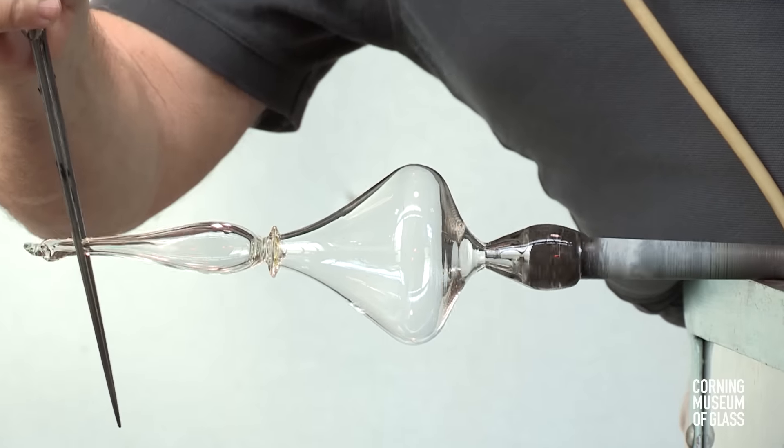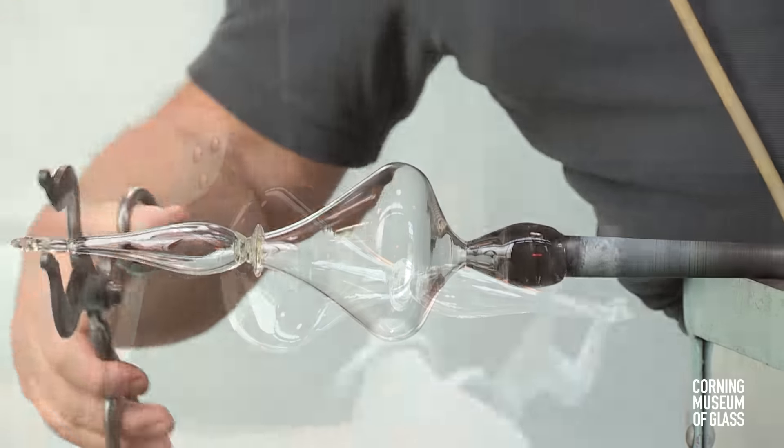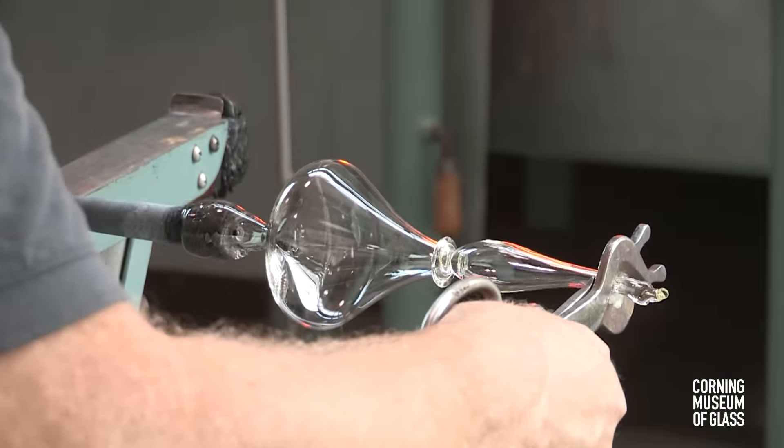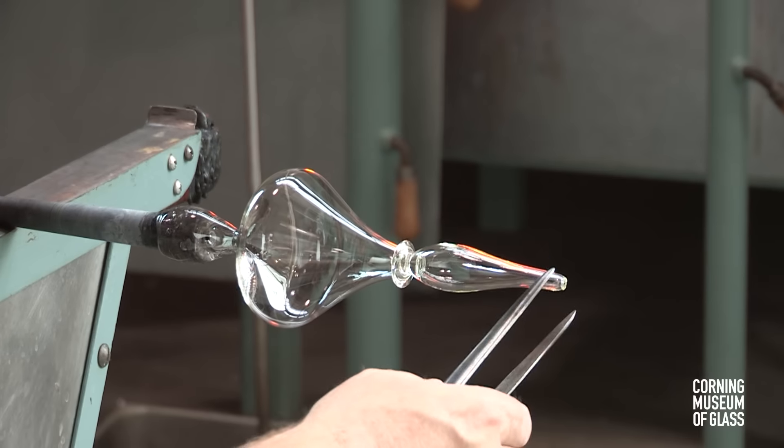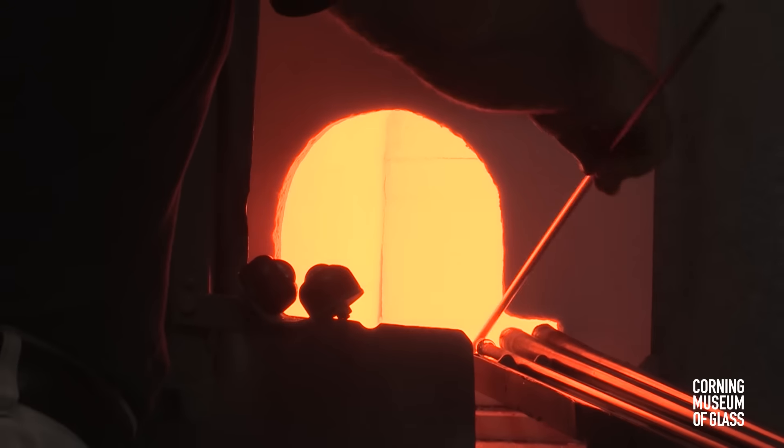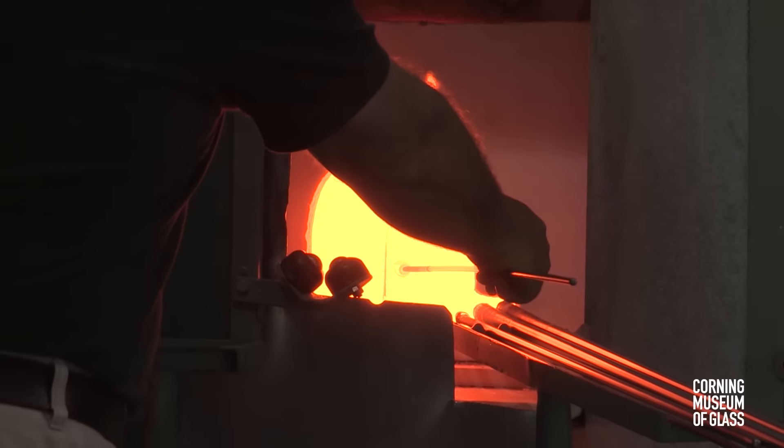Excess glass is trimmed away on the tip of the stem. Another merese is formed.